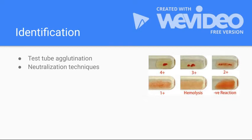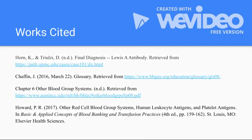Another technique is neutralization. The principle of this method is that by combining a commercially prepared substance with the patient's serum, the soluble antigen in the commercial product will inactivate the antibodies in the patient's serum if they are in fact present. And that concludes the presentation on the Lewis blood group system.